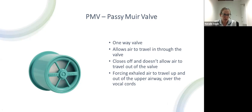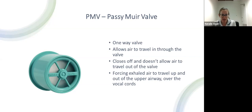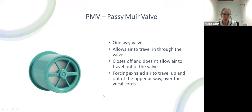Now talking about Passy Muir valves. It's a one-way valve which allows air to travel in through the valve and then closes off when the patient breathes out, so the air isn't traveling out of the valve. It's got a thin film of plastic which closes when the patient breathes out, forcing that exhaled air to travel up and out of the upper airway over the vocal cords. This enables patients to start to speak, start to swallow, and it's an important aspect of our weaning process. For longer-term tracheostomy patients it enables more independence and ability to communicate.